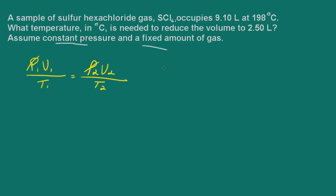So what we're left with is initial volume over initial temperature equal to final volume over final temperature. So let's go ahead and define each one of these.